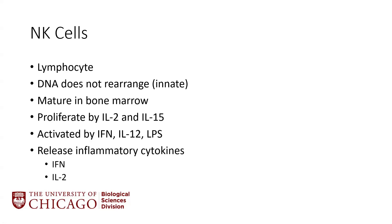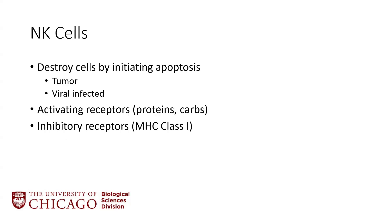NK cells can be activated by interferon, IL-12, or LPS, and they release the inflammatory cytokines interferon and IL-2. There's a whole lot of positive feedback in the immune system when inflammation starts — cytokines activate cells, which release more of that cytokine to increase the inflammatory response. NK cells destroy cells by initiating apoptosis, for example in tumor cells or virally infected cells. They bind to the cell, and there is a series of activating and inhibitory receptors — depending on the signals received, the NK cell will start programming that cell to die by apoptosis.